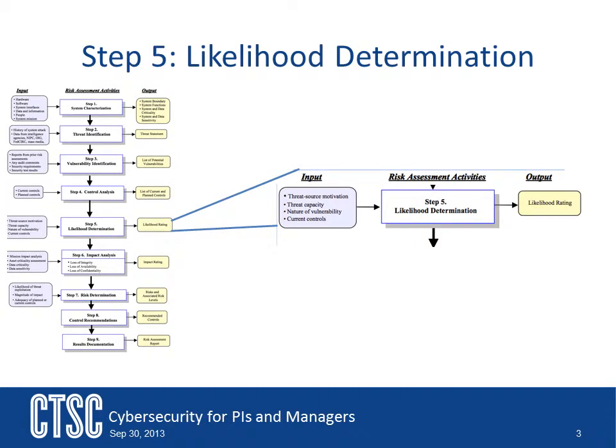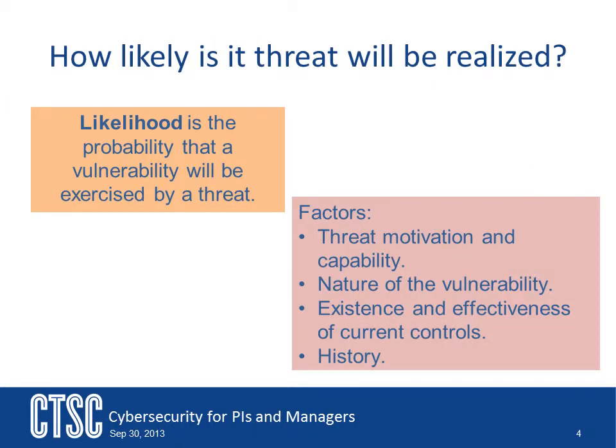In this part of the tutorial, we will begin by looking at making the likelihood determinations. Based on the information we have gathered so far, we will begin to look at the likelihood of the risk actually occurring. Likelihood is defined as the probability that a vulnerability will be exercised by a threat — in other words, how likely is it? What is the probability of a particular vulnerability actually being exercised or exploited by a particular threat?